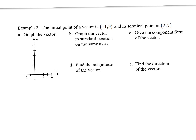We're supposed to graph it. So we start at the initial point (-1, 3), graph the terminal point (2, 7), draw it from here to there, and put a little arrow to show direction. Now for part B, graph the vector in standard position. To get the initial point back to (0,0), you move it right 1 and down 3. Do the same thing to the terminal point: move it right 1 and down 3, and it ends up at (3, 4).